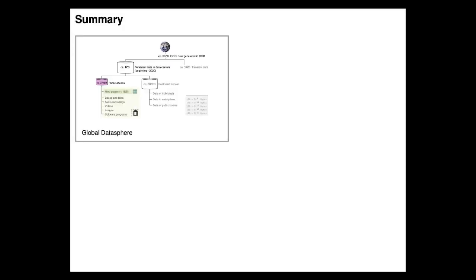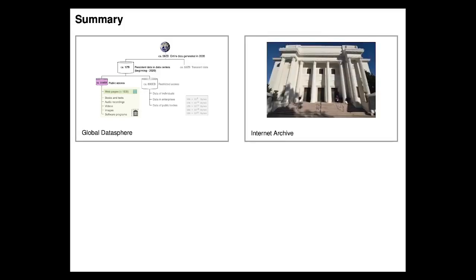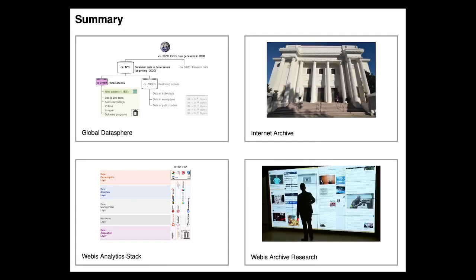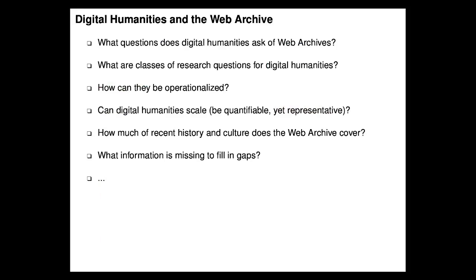This is it — I'll stop here. That was quite a lot and I hope your heads are not yet entirely overwhelmed with new things. To recap: I showed you what the global data sphere is, how large it is, and how it breaks down into public and restricted access data. I gave you some background on the Internet Archive, talked about how we make use of the web archive data using our analytics stack, and finally showed some research problems as examples of what useful things can be done.